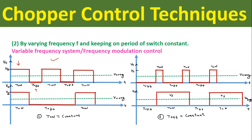In this way we can vary the total time period. In the second figure we are keeping the off period of the switch constant and varying the on period of the switch. By comparing both figures, we can see that varying the on period changes the total time period and eventually varies the frequency to control the average output voltage.